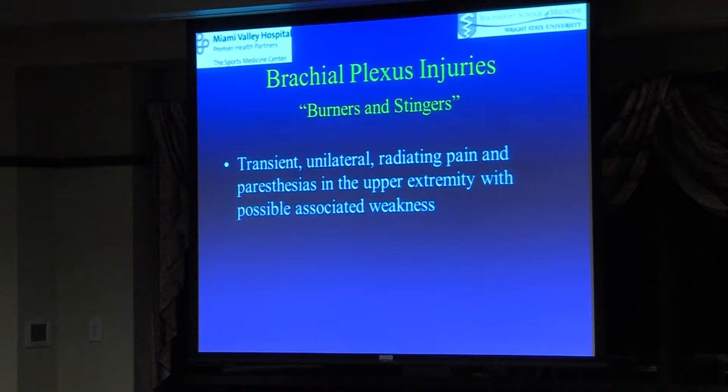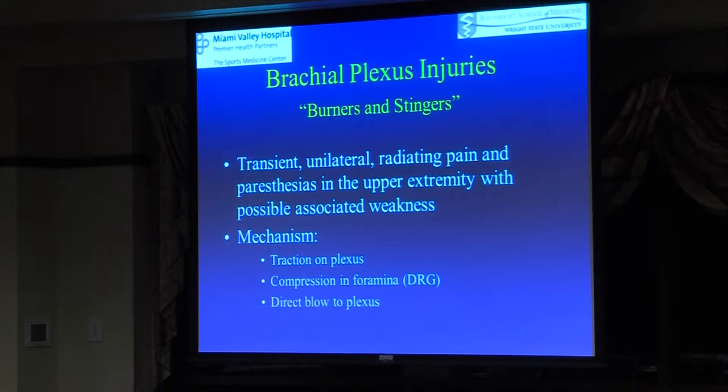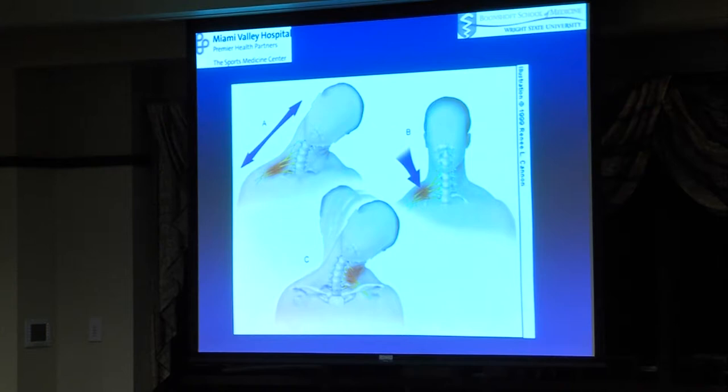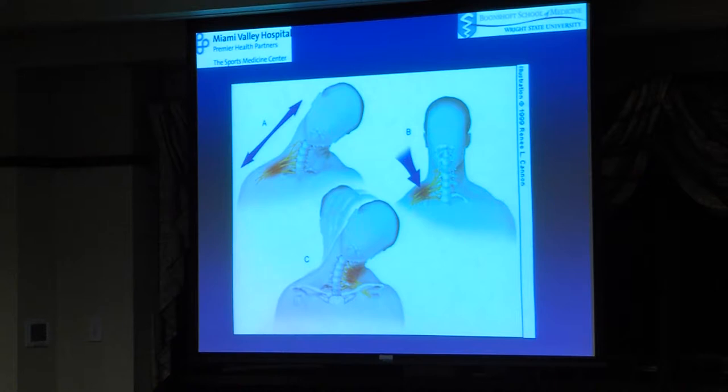The people who have this happen typically have it happen again and again. The mechanism is traction on the brachial plexus, or compression of the plexus, or a direct blow. Head getting twisted away from the shoulder creates traction on the plexus; getting hit on the neck can create compression. The upper trunk, involving C5 and C6 nerves, is typically what gets injured.